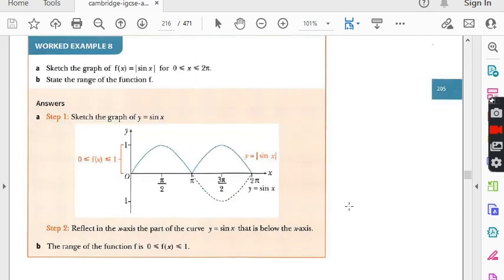Look at the worked example number eight. After this example you will feel very comfortable and you will be saying that this is a very easy part. Part A is: Sketch the graph of f(x) equals sine x for 0 to 2π. You know 0 to 2π means this is the domain.